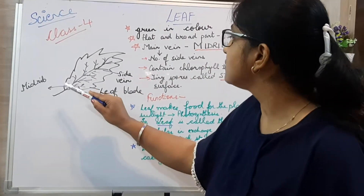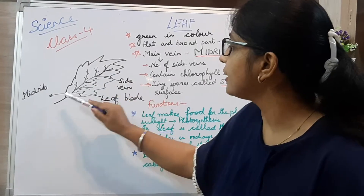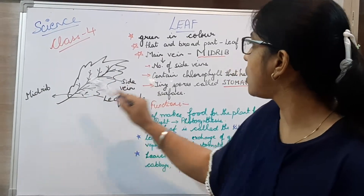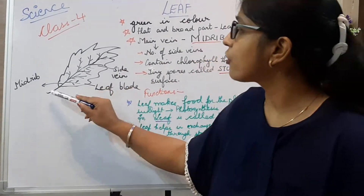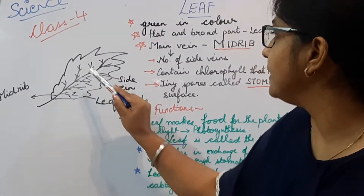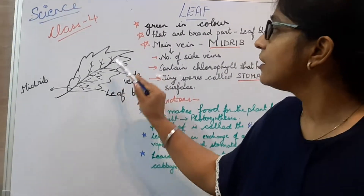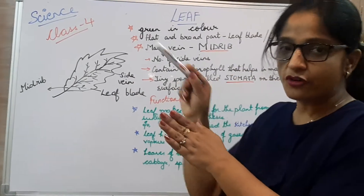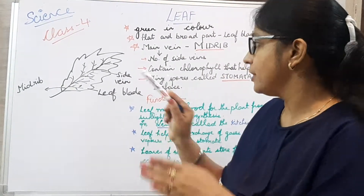There is a main vein running in the leaf called the midrib. From this main vein, there are many small side veins running through the midrib.